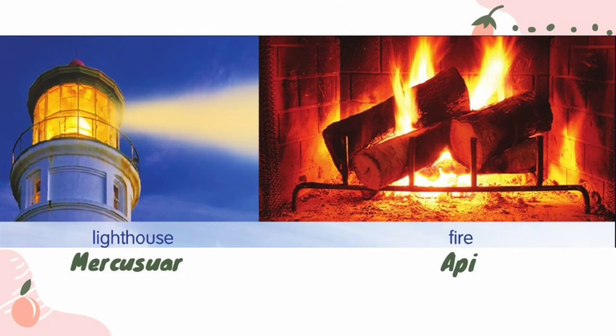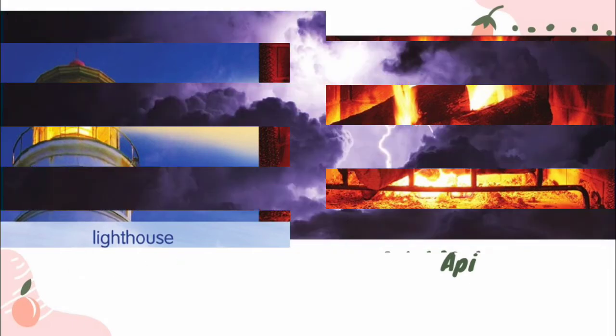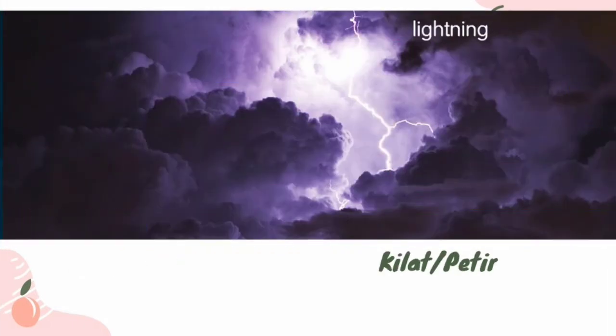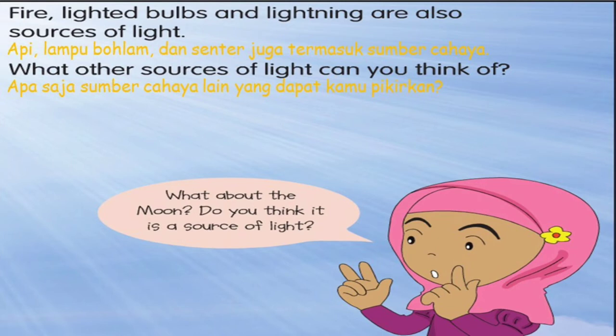This is the example: lighthouse atau mercusuar, fire atau api. Next, lightning atau kilat atau petir. Fire, light bulbs, and lightning are also sources of light. Api, lampu bohlam, dan kilat juga termasuk sumber cahaya.